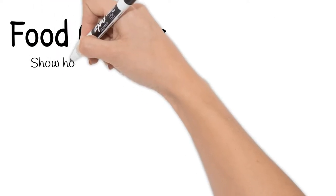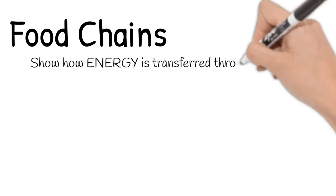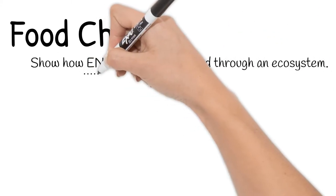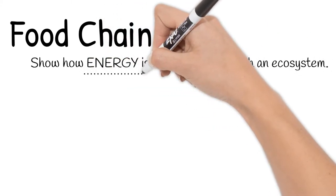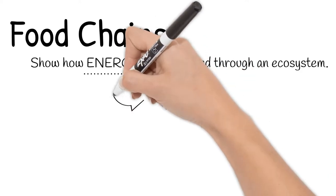Welcome back to Short Simple Science. Food chains are a huge part of ecosystems and are today's topic. Food chains show how energy is transferred through an ecosystem. Energy is needed to do work or cause change.